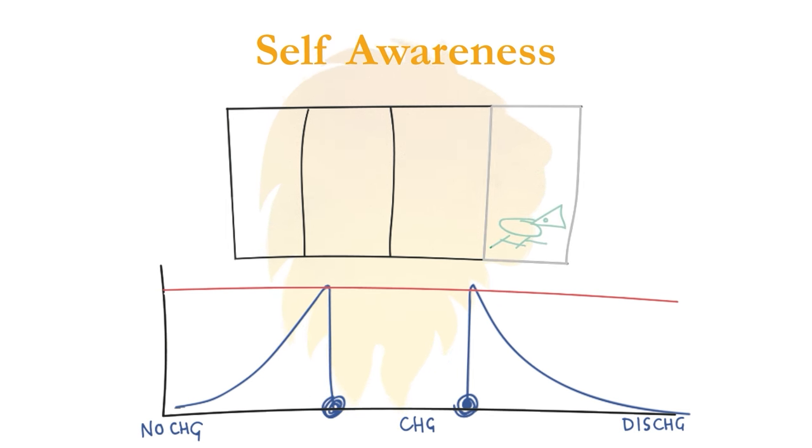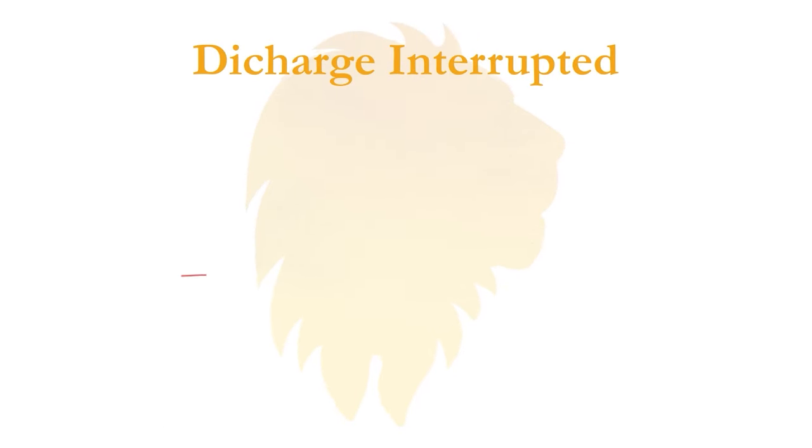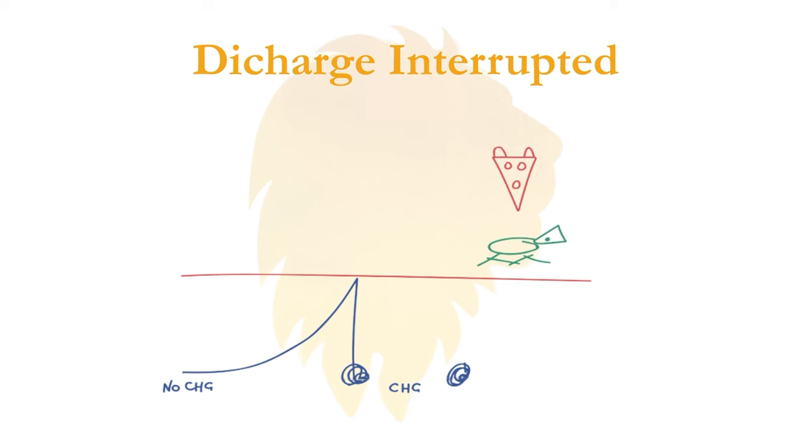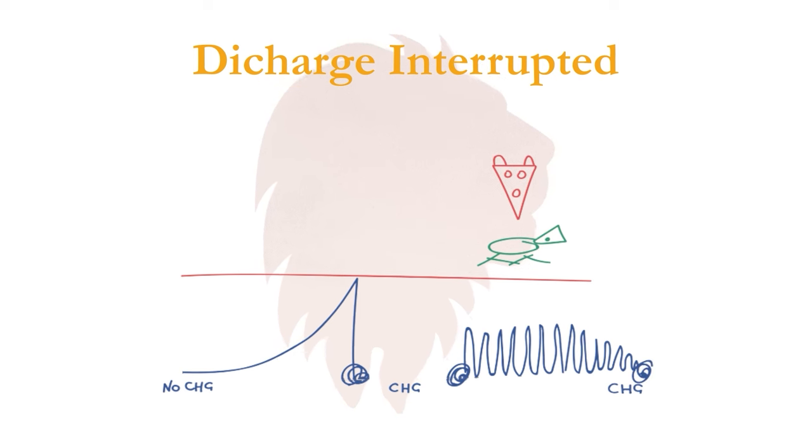If you add in a new threat, just as the gazelle is trying to discharge the energy of an old threat, then the blue squiggly line, the charge, isn't fully released or discharged. There's been no opportunity for it to get up over the red line and organically discharge back to its normal resting state. It can't get back to square one, homeostasis.